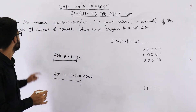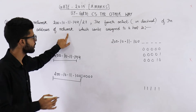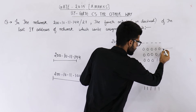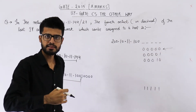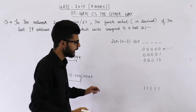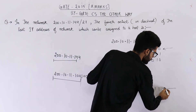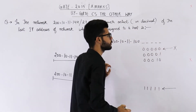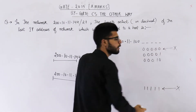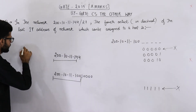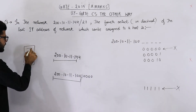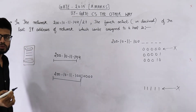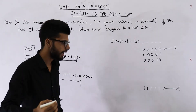Now they are asking about the last IP address of the network which can be assigned to a host. The first IP address in a network represents the network ID for that entire network, and the last IP address is going to represent the broadcast address. So this IP address cannot be assigned to any host, and this one will also not be assigned to any host. So what will be the last IP address that can be assigned to a host?